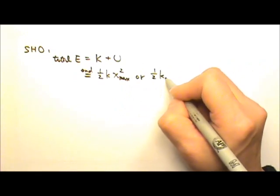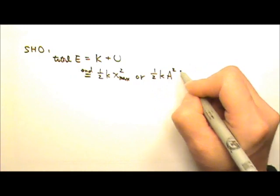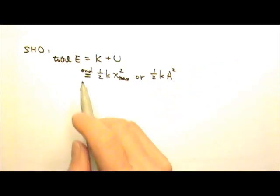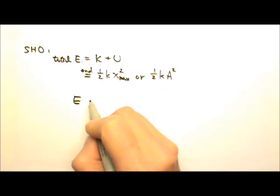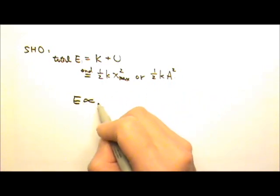which means this will be one-half k capital A squared. Therefore, the energy carried by a simple harmonic oscillator or by a wave is proportional to the amplitude squared.